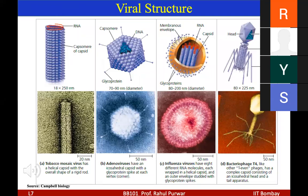Viral structure can be cylindrical — with the genome in the core surrounded by a protein shell or capsomeres — or different polyhedral shapes like adenoviruses, or very complex structures like bacteriophages.